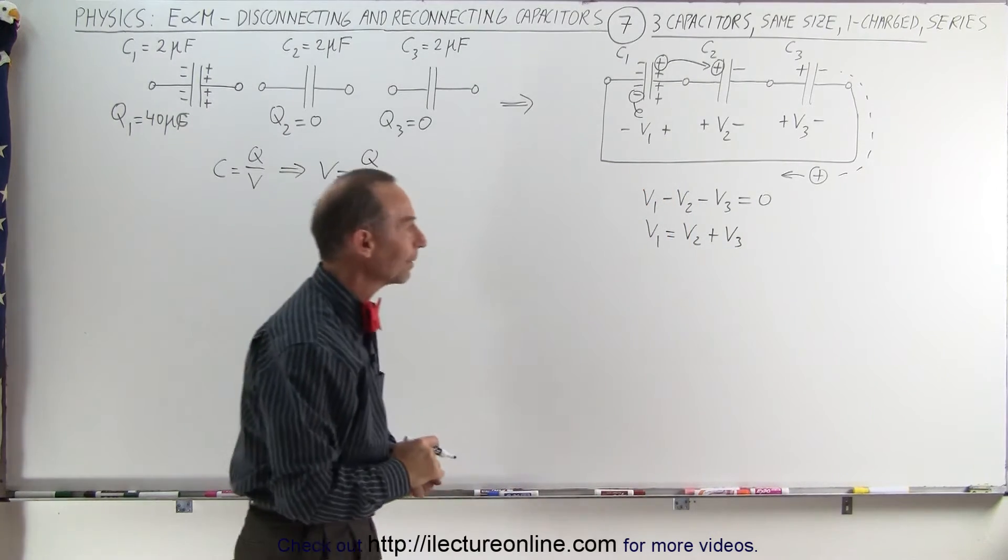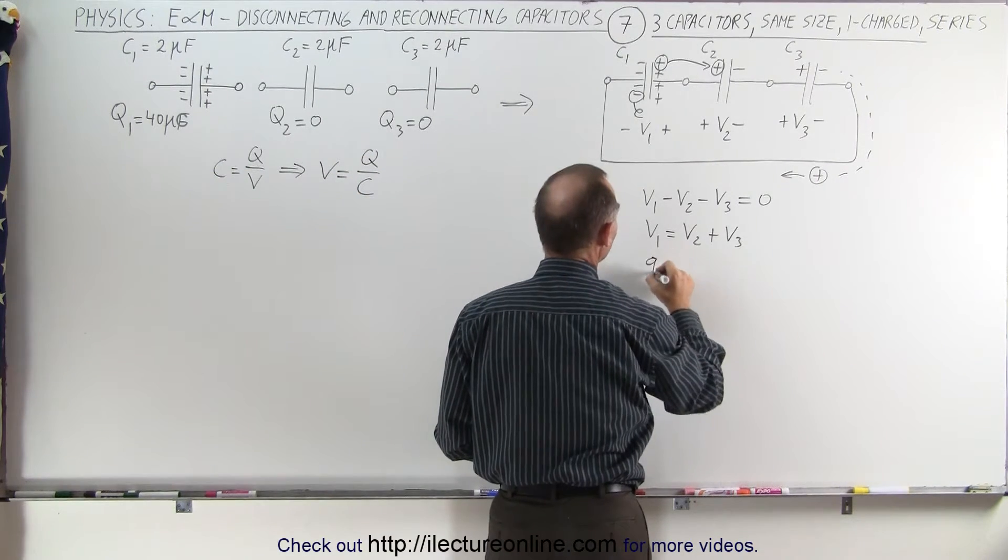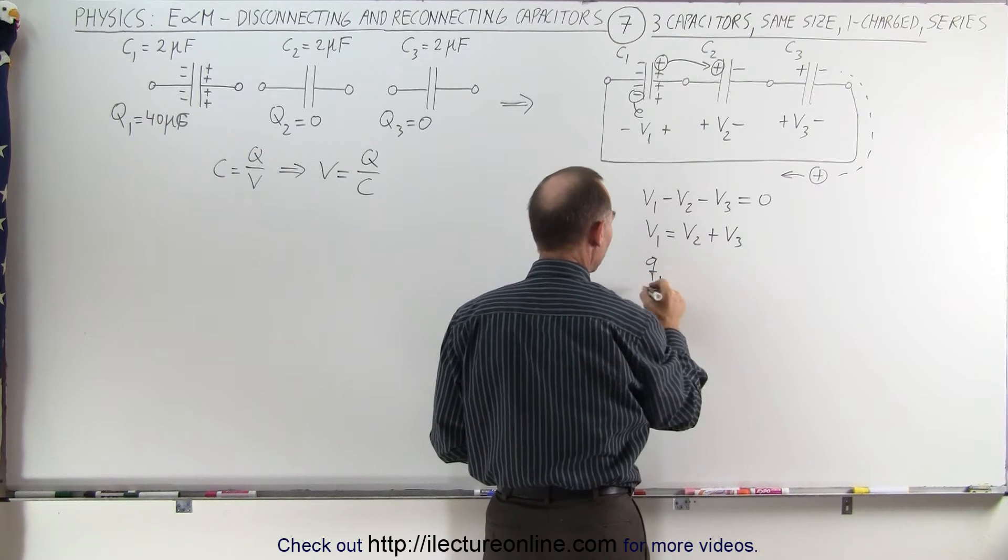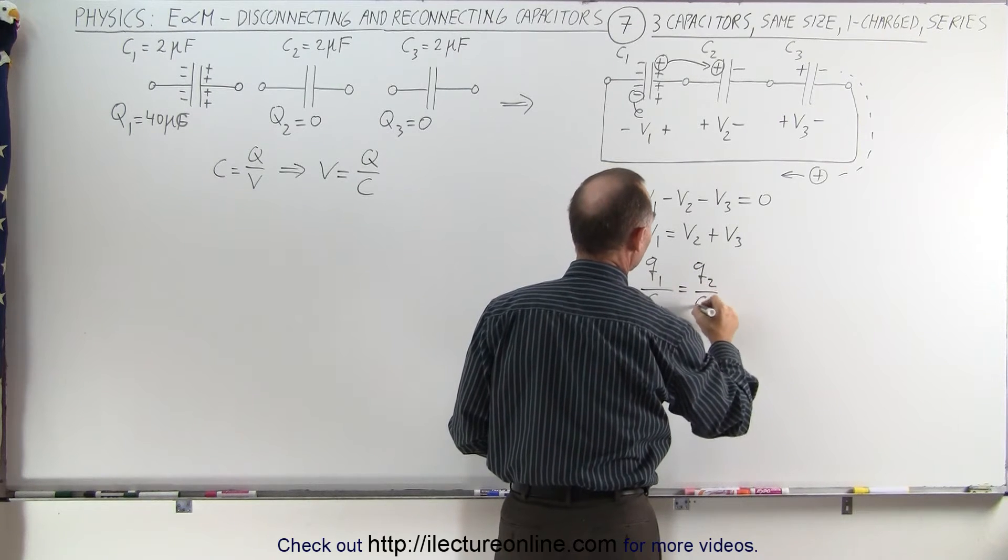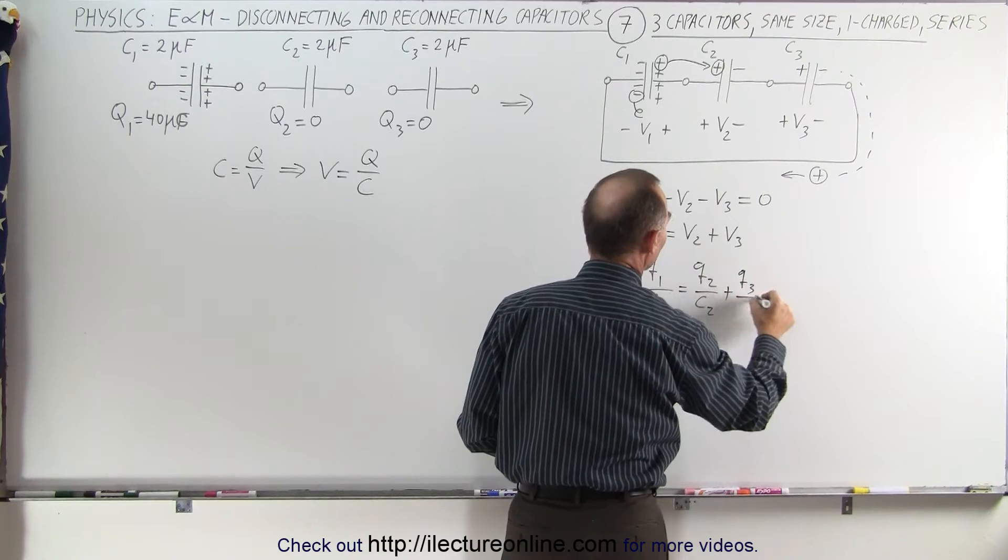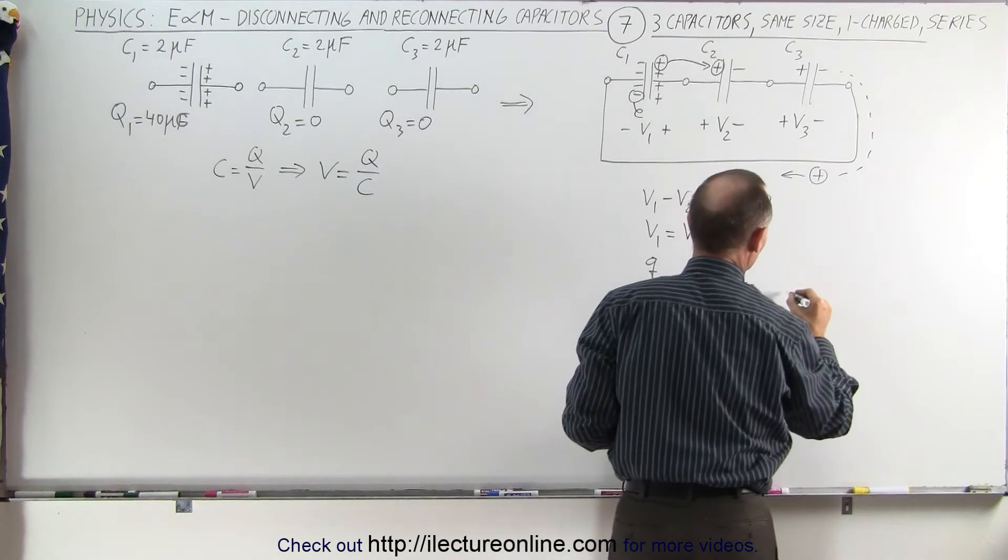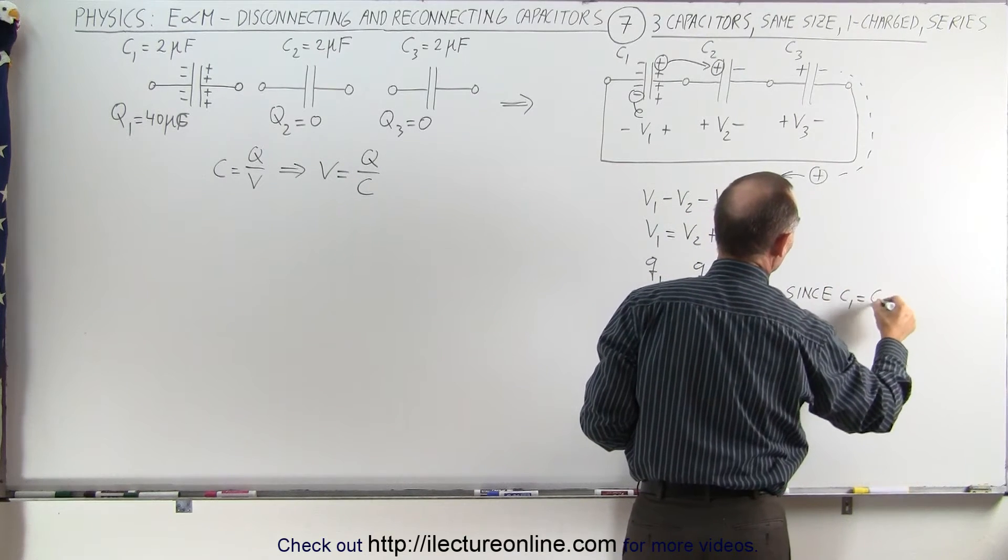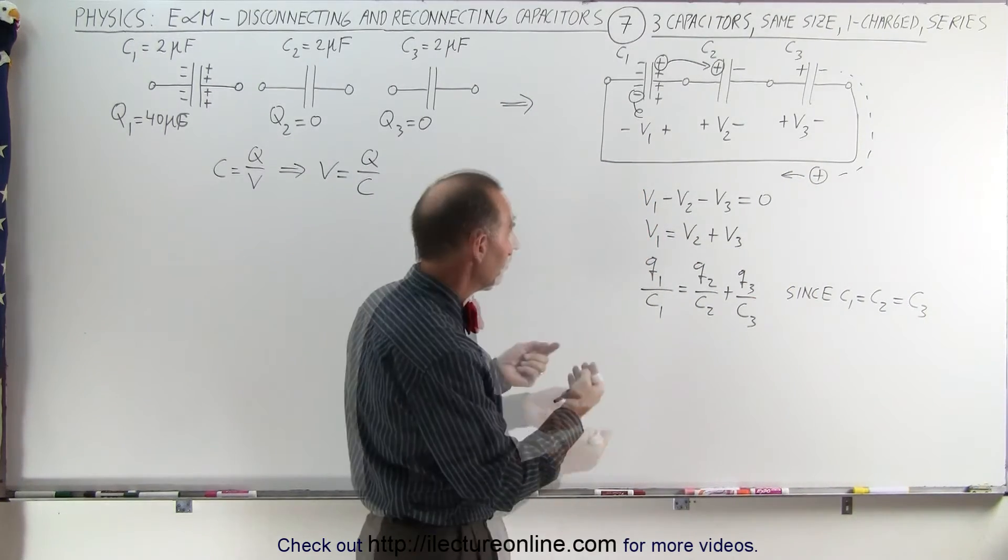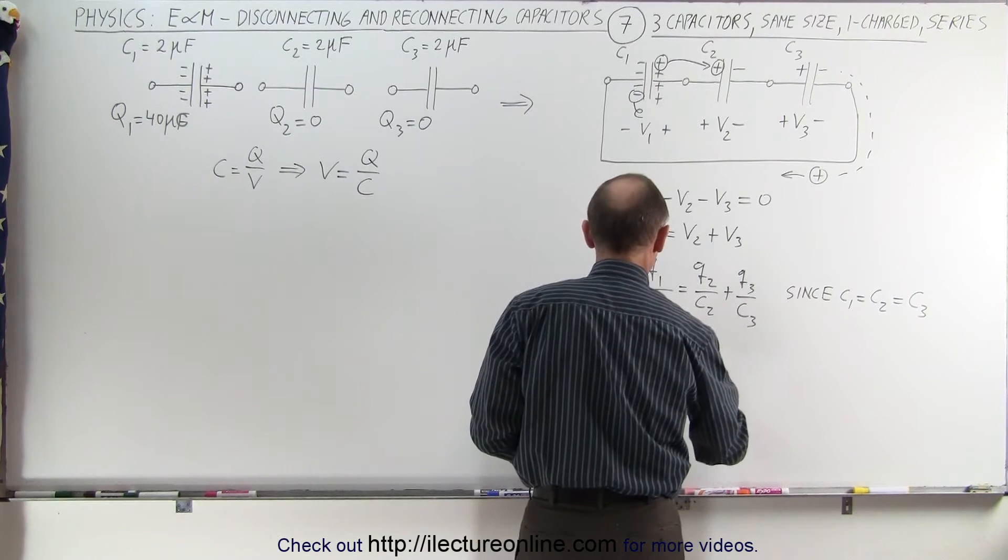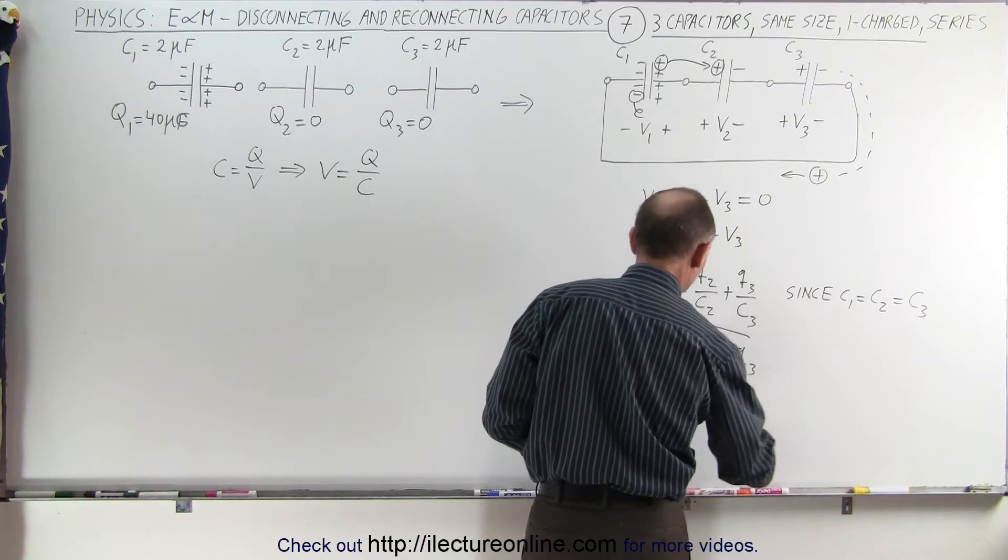The next thing we're going to do is make the substitution. V1 is going to equal the final charge on C1, which is Q1, divided by C1, equals Q2 divided by C2 plus Q3 divided by C3. Since all the capacitors are the same size, since C1 equals C2 equals C3, we can simply get rid of the Cs because we're dividing every Q by the same number. We can then write that Q1 equals Q2 plus Q3. So there's our first equation.